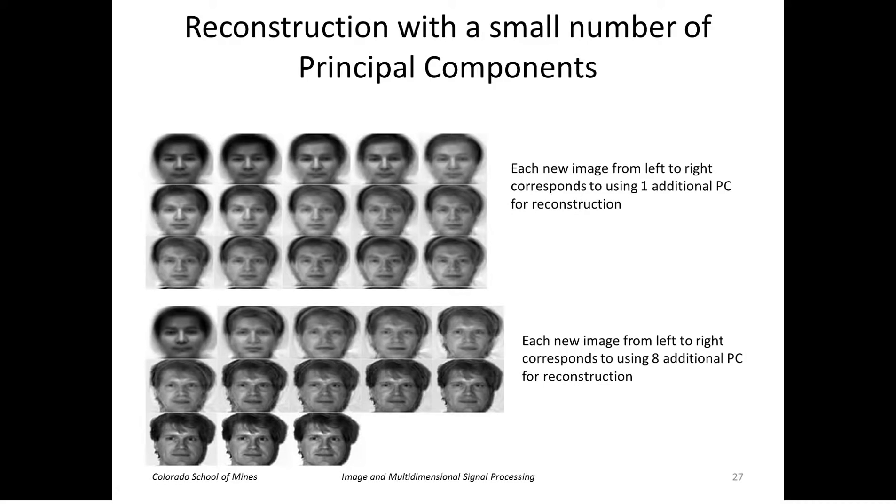This shows reconstruction with a small number of principal components. So this figure here is the mean face or the average face, and this shows reconstructing one of the faces with one additional principal component at each step. So this is mean plus one principal component, mean plus two principal components, plus three, and so forth. So as the number of principal components increases, the definition or accuracy of the reconstructed face gets better and better.